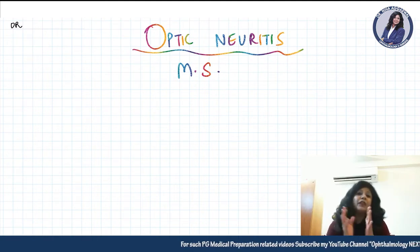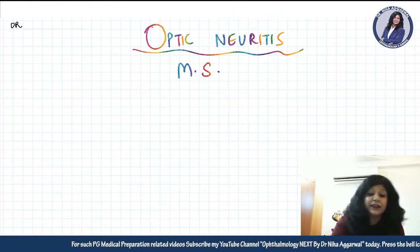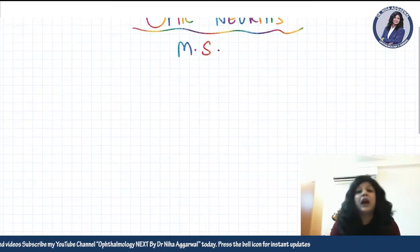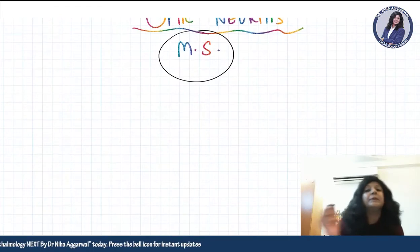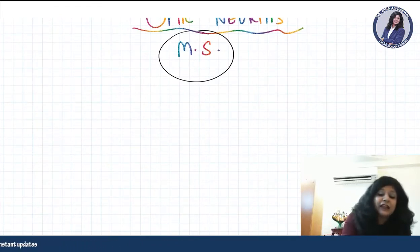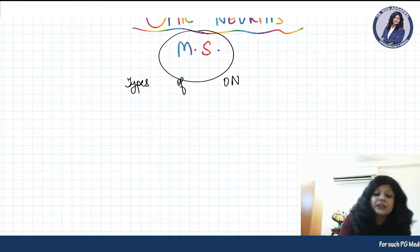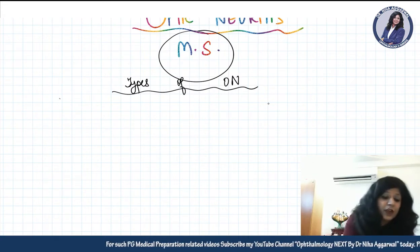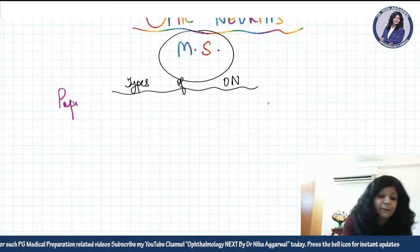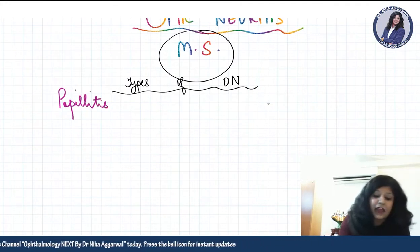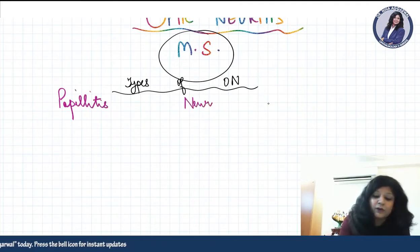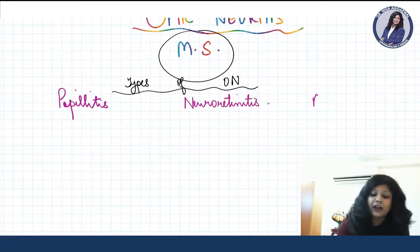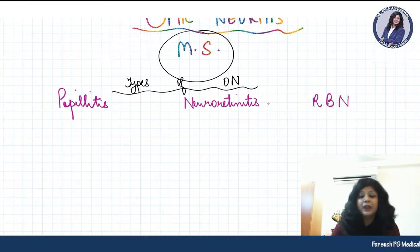Whenever we talk about optic neuritis, the first thing that comes to mind is multiple sclerosis. The types of optic neuritis can present in three forms: one is papillitis, then we have neuroretinitis, and third is retrobulbar neuritis.